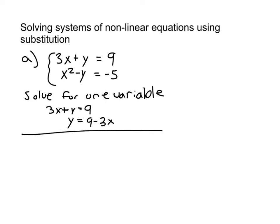Then once you have that, you can plug that into the other equation. So I had x squared minus y equals negative 5. And now if I plug in the y that I just found from the other equation, I get x squared minus 9 minus 3x equals negative 5. If I distribute the negative sign, I get x squared minus 9 plus 3x equals minus 5.